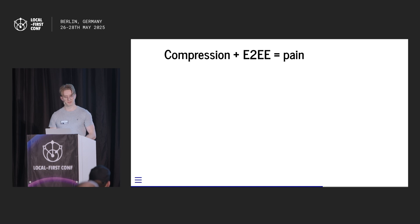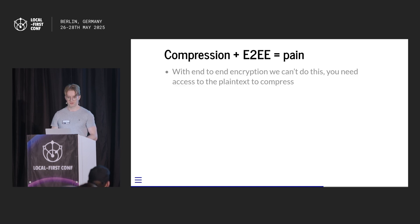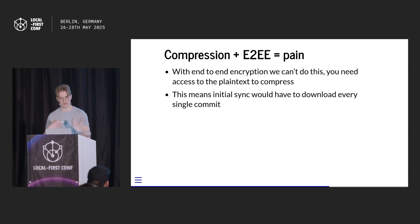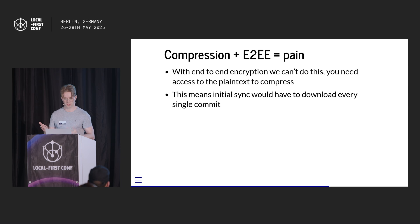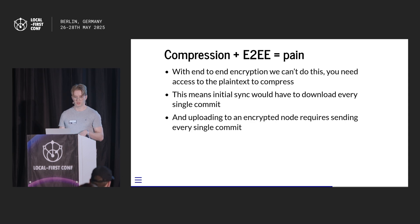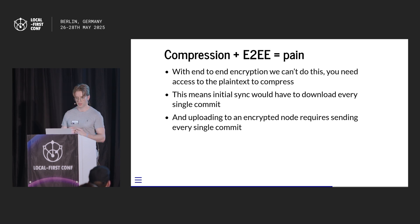But we can't do this when it's end-to-end encrypted, because the server needs access to the plaintext in order to compress things. Right now, if I'm downloading a document for the first time from a sync server, the server would dynamically compress it because it's received commits from different peers and will send a compressed version. With end-to-end encryption, we can't do that. Likewise, we can't upload compressed documents to the sync server because it won't be able to uncompress them to send commits individually to clients mid-sync.